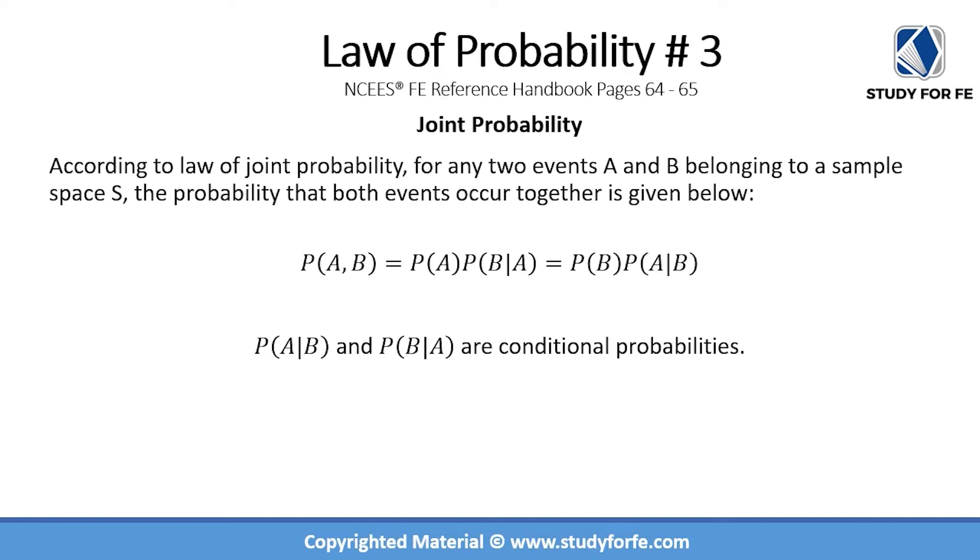Law of Probability Number Three is also known as the law of joint probability. According to this law, for any two events A and B belonging to a sample space S, the probability that both events occur together is given below.